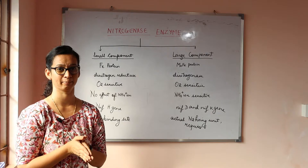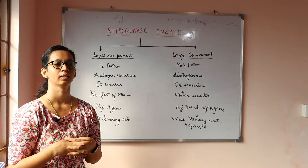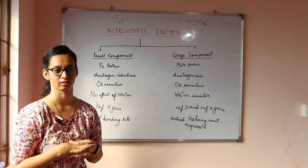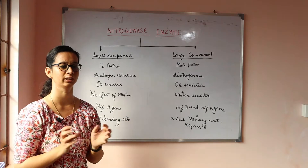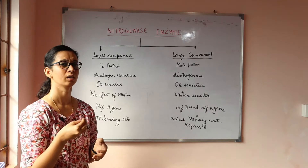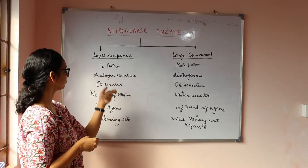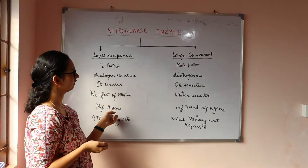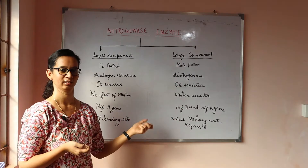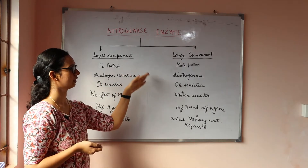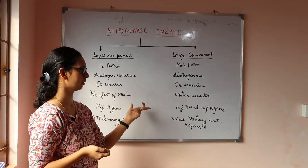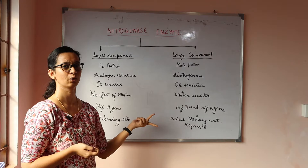The entire nitrogenase assembly is coded by several genes called NIF genes, and there is a whole cluster of genes. The small component is coded by the NIF H gene, and the large component is coded by NIF D and NIF K genes. This is important because CSIR frequently asks questions on which gene codes for which unit.